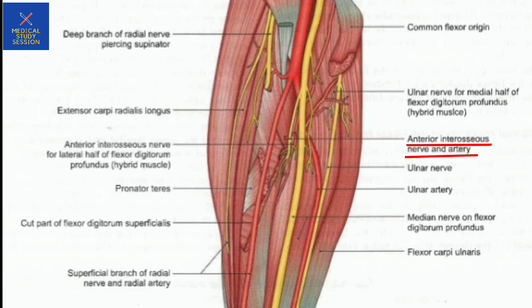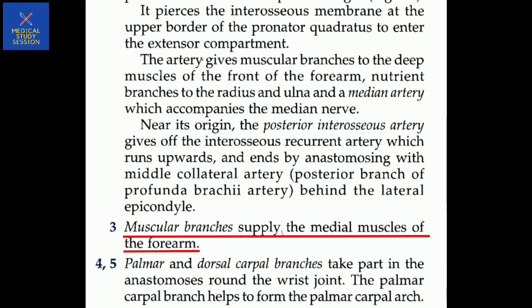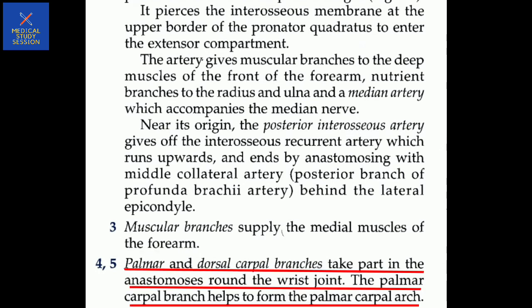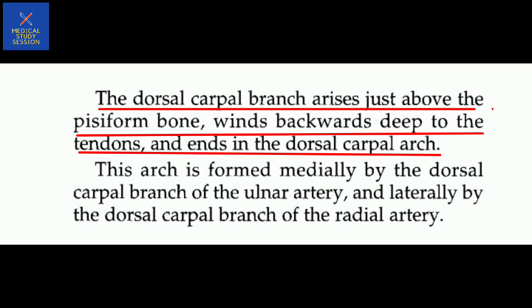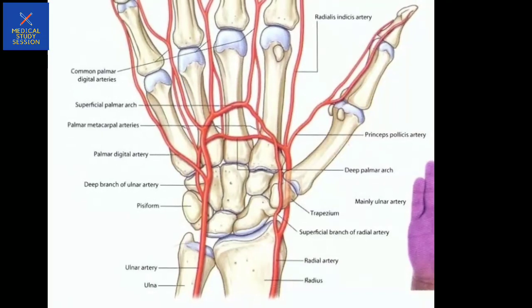The anterior interosseous artery also gives nutrient branches to the radius, and the posterior interosseous artery continues into the extensor compartment. The palmar and dorsal carpal branches take part in the anastomosis around the wrist joint. The palmar carpal branch helps to form a palmar carpal arch, and the dorsal carpal branch arises just above the pisiform bone, winds backward deep to the tendons, and joins the dorsal carpal arch.